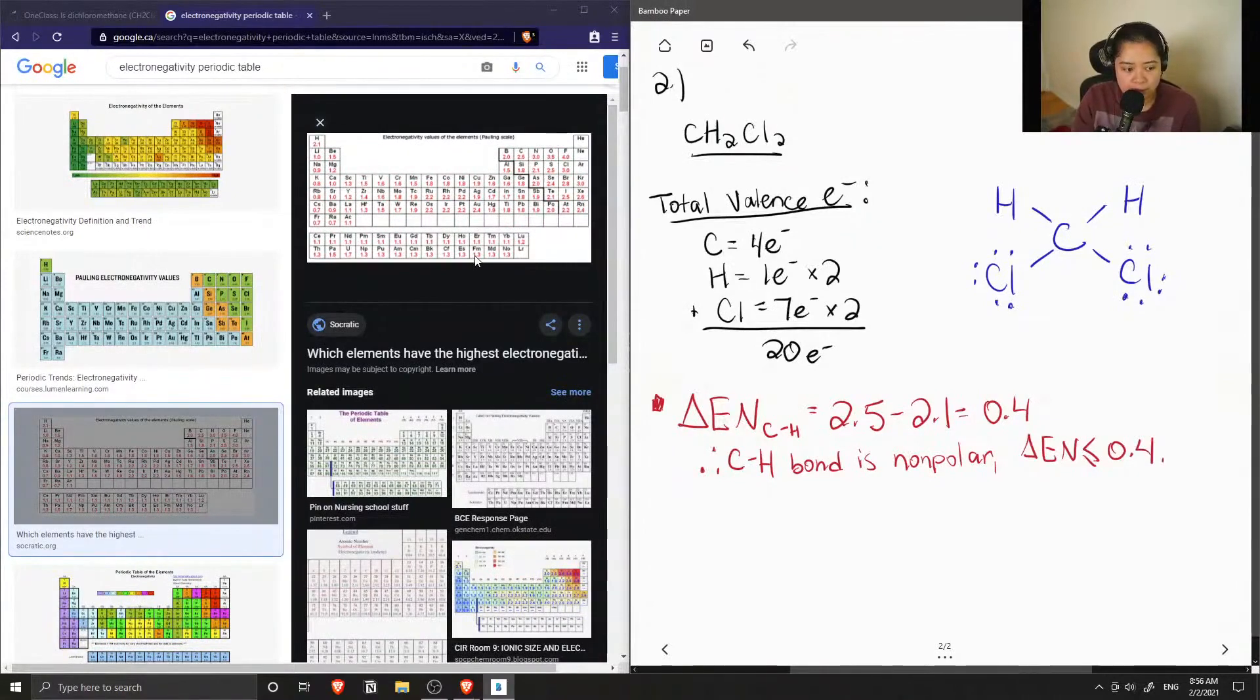So now let's calculate the electronegativity difference between carbon and chlorine. So chlorine's electronegativity value is 3, carbons is 2.5.